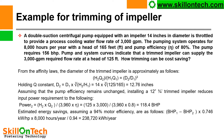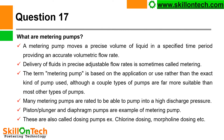Estimated energy savings, assuming 94% motor efficiency, are: (BHP1 − BHP2) × 0.746 kW/HP × 8000 hours/year ÷ 0.94 = 238,720 kWh per year.